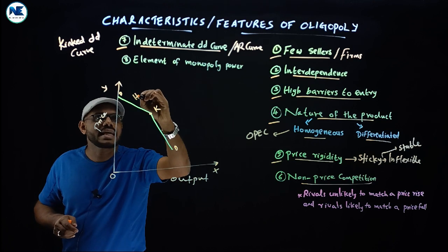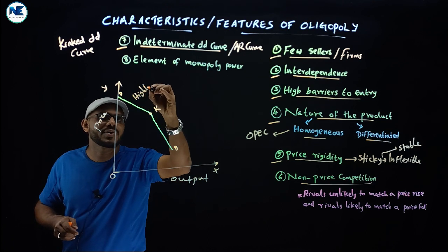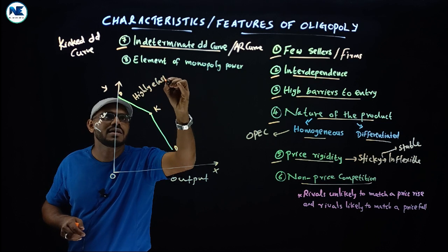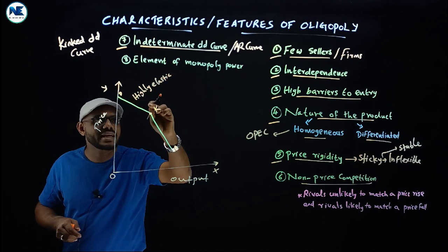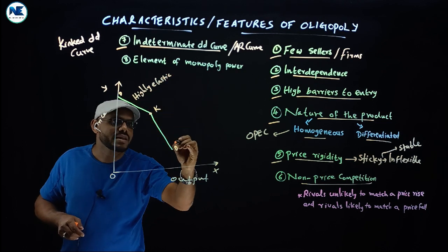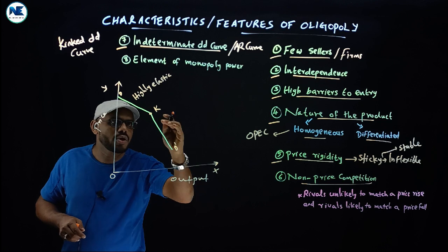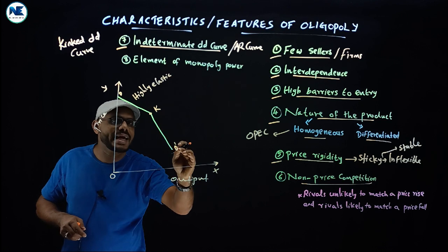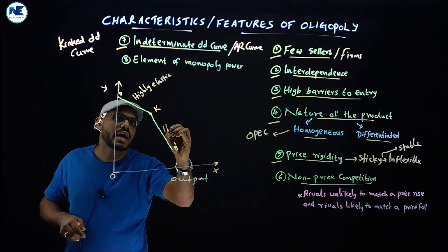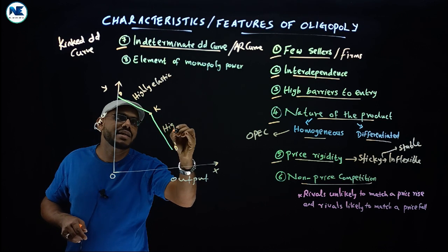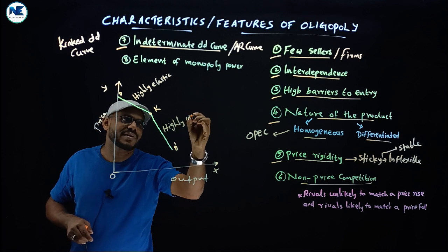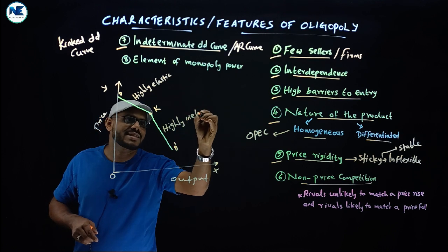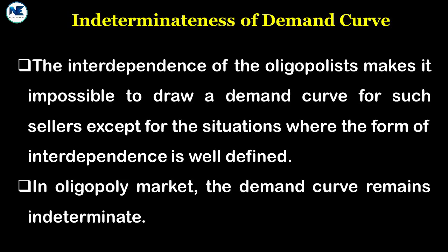The upper portion DK is highly elastic, while the lower portion KD-dash is highly inelastic. This is the key characteristic of the kinked demand curve under oligopoly — the demand curve is not smooth as in monopoly or perfect competition.